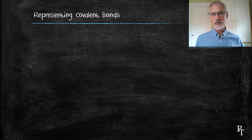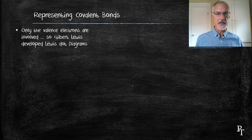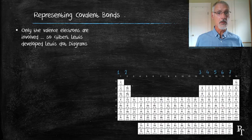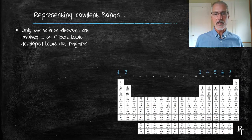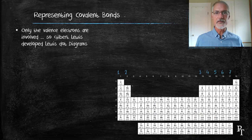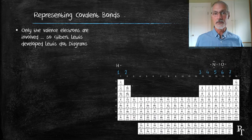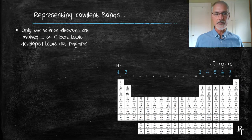The way we represent covalent bonds is by means of something called a Lewis dot diagram. The first thing we have to understand is to focus on what are called the valence electrons. You might recall those are the ones that are available in the highest energy levels. If we look at our periodic table, here in blue I've placed what the number of valence electrons are for various elements. So we would represent hydrogen with a single dot, nitrogen with five dots, oxygen with six, and chlorine would have seven. Likewise all the members of their families.